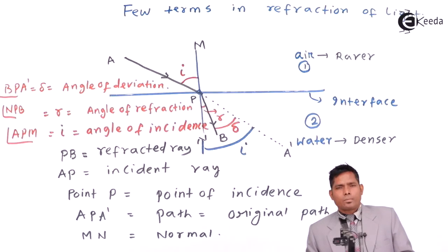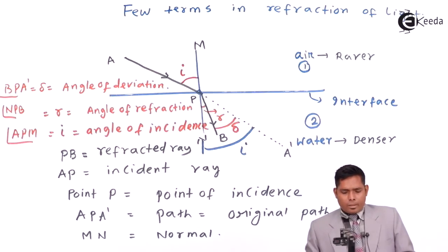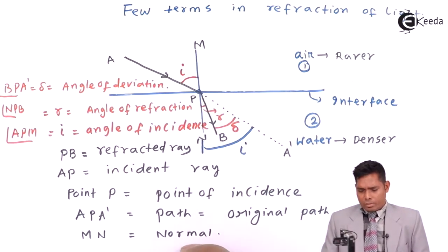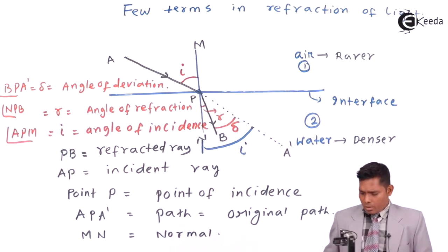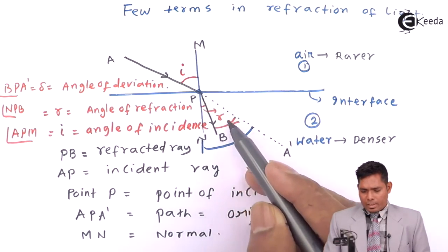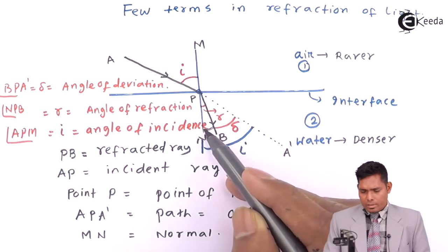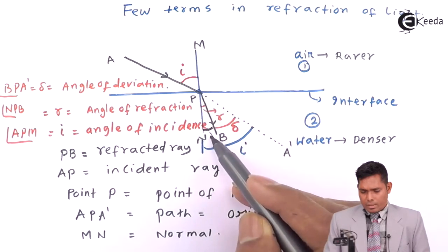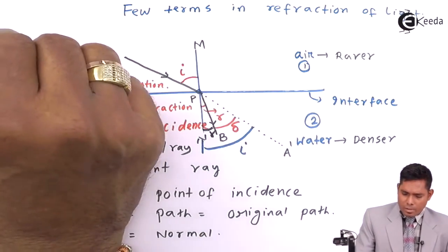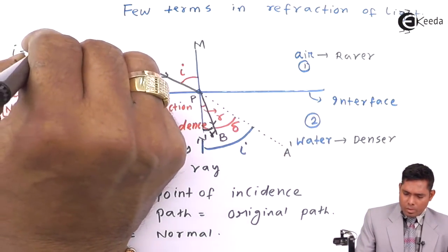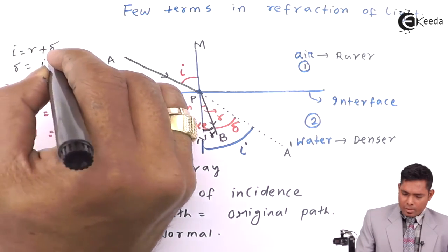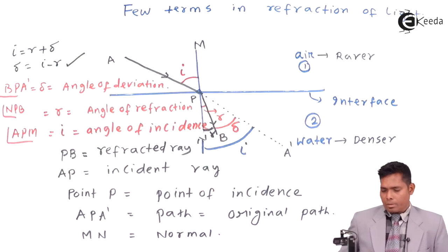Delta, I, and R have a certain relationship. You can see that the total angle is I, this angle is Delta, and this angle is R, so I equals R plus Delta. Whenever Delta is asked, we can write Delta equals I minus R using this formula.